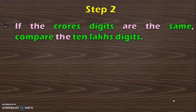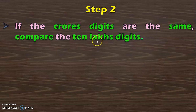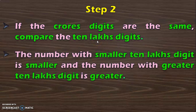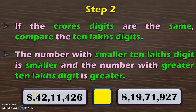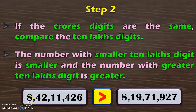Suppose you have two 8 digit numbers with the crore's digit being the same. Then you will have to move on to the next lower place value to the right side, which is the 10 lakhs digit. The number with smaller 10 lakhs digit is smaller and the number with greater 10 lakhs digit is greater. We have two 8 digit numbers with the crore's place value being the same. So next move on to the 10 lakhs digit where you have 4 and 1. We know that 4 is greater than 1. With that you conclude 8 crore 42 lakh 11,426 is greater than 8 crore 19,717,927.